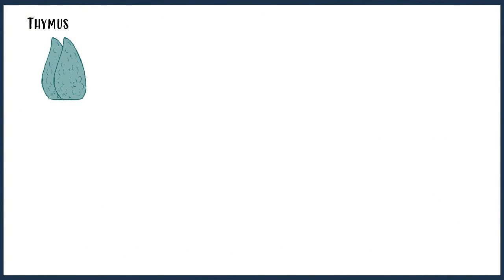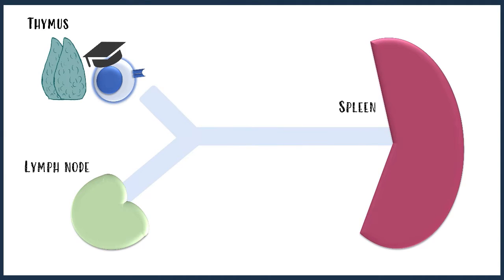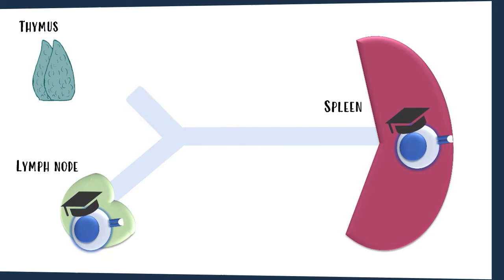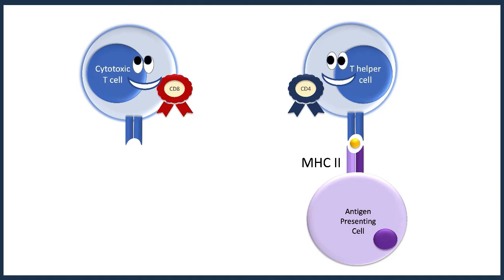Helpfully, CD8 T-cells are similar to CD4 T-cells in a number of ways. They both grow up in the thymus and have a unique T-cell receptor directed against a specific antigen. After leaving the thymus, they both hang out in secondary lymphoid tissue such as lymph nodes and spleen. But they also have some key differences. CD8 T-cells recognize antigens that are presented via MHC1 molecules — they do not interact with MHC2.